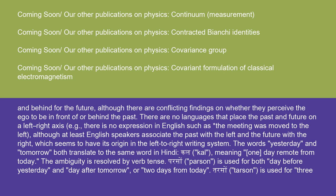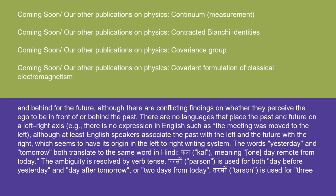The words yesterday and tomorrow both translate to the same word in Hindi, 'kal,' meaning one day remote from today; the ambiguity is resolved by verb tense. 'Parson' is used for both the day before yesterday and the day after tomorrow; 'tarson' is used for three days from today; and 'narson' is used for four days from today. The other side of the psychological passage of time is in the realm of volition and action — we plan and often execute actions intended to affect the course of events in the future.